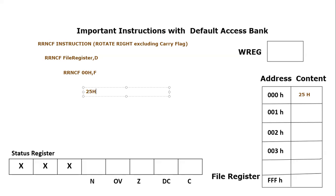If we convert 0x25 hex to binary, that will be 0010 0101. This is the binary equivalent of 0x25 hex, which is the content of the 0x00 hex register.